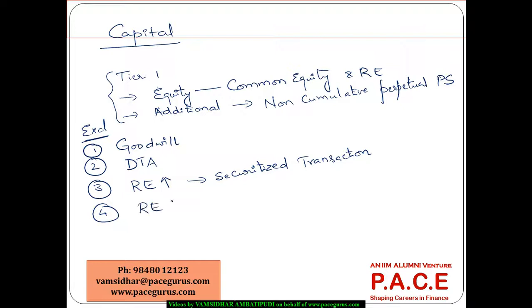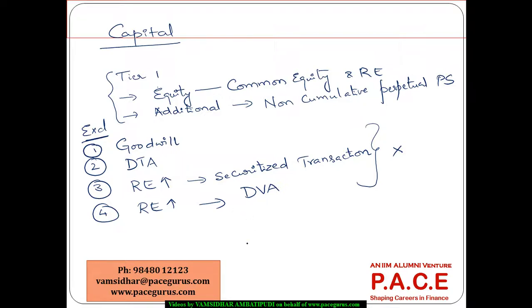Similarly, any kind of change in the retained earnings because of debt value adjustment — an adjustment towards derivatives transactions that also resulted in an increase in retained earnings — all these things should be removed. Whatever is the remaining capital, that is what we are calling as the Tier 1 capital.